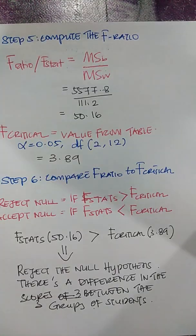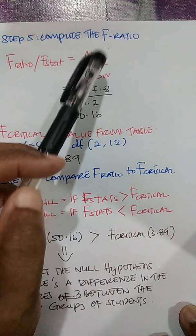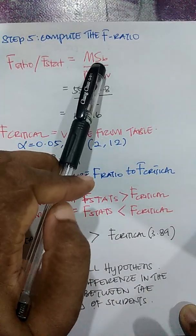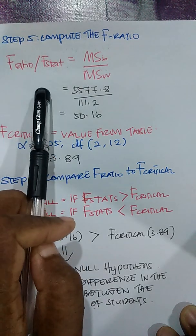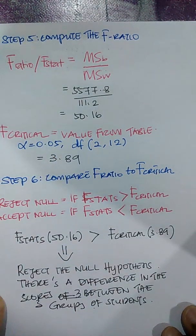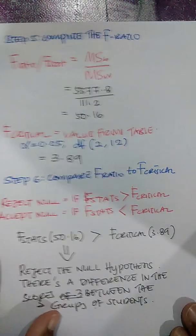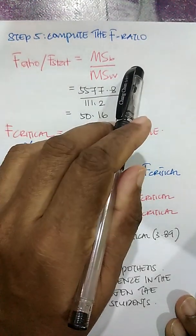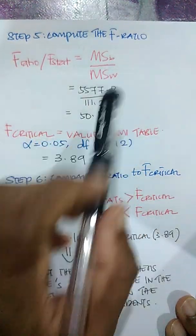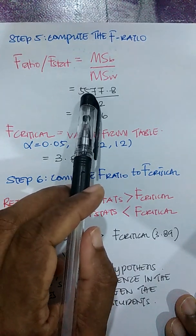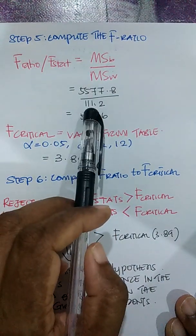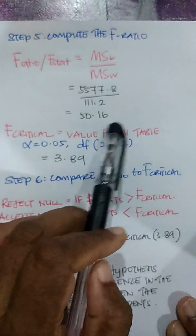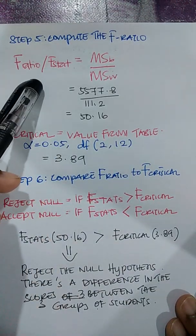In step 5, I compute the F-ratio, also known as the F-statistic, which is mean square between divided by mean square within — 577.8 divided by 111.2 gives an F-ratio of 50.16. Now I need to find the F-critical value from the table.